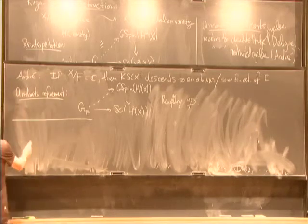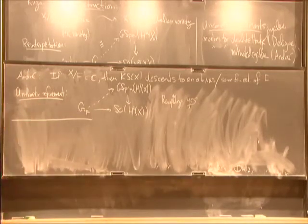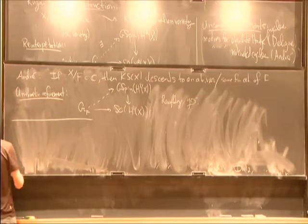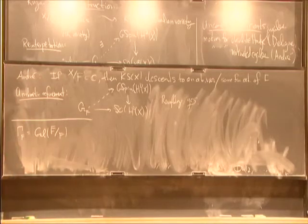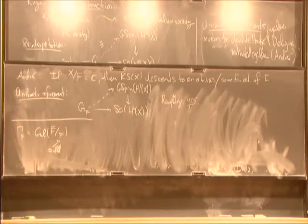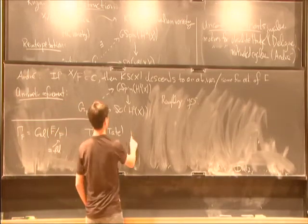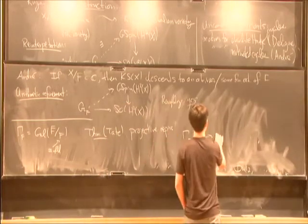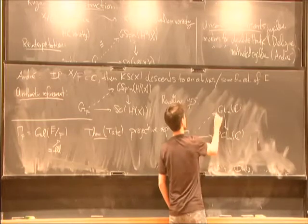I started thinking about this problem because of a purely Galois theoretic question, just the title of the talk. So now we'll go entirely to arithmetic, forget K3s, forget G-spin, and think about the following general setting. Let Gal_F be the absolute Galois group of F, now F will be a number field.